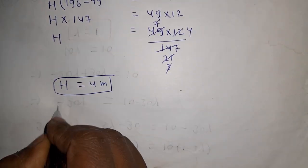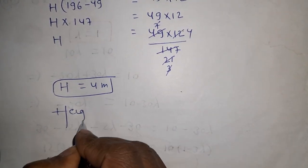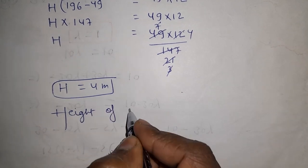So the height of the embankment is 4 meters.